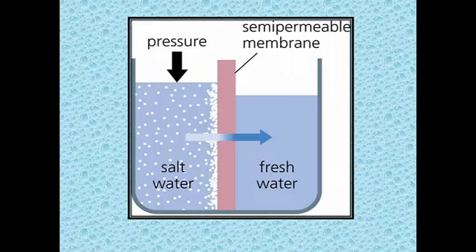For example, if the cell is submerged in salt water, as you can see, water molecules move out of the cell. If a cell is submerged in fresh water, water molecules move into the cell. Salt is a solute. When it is concentrated inside or outside the cell, it will draw the water in its direction. This shows why you get thirsty after eating something salty.